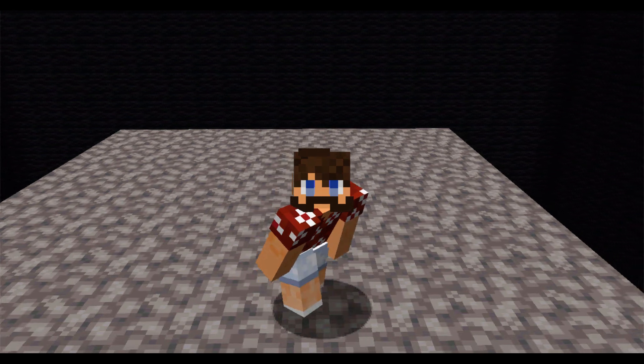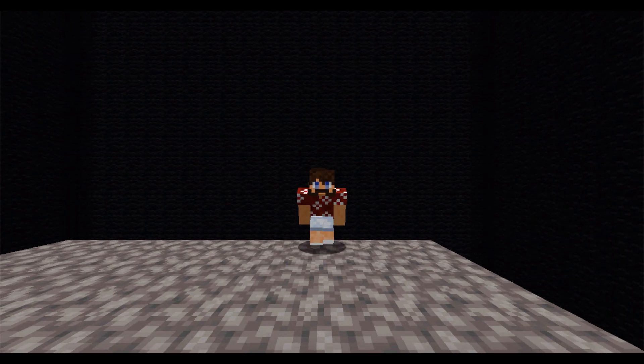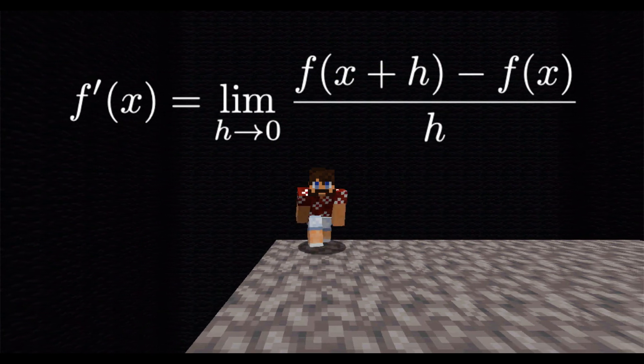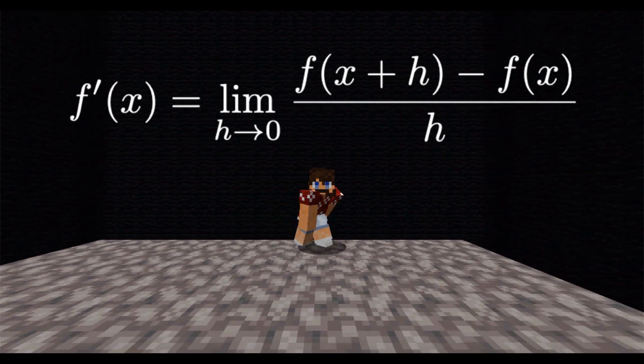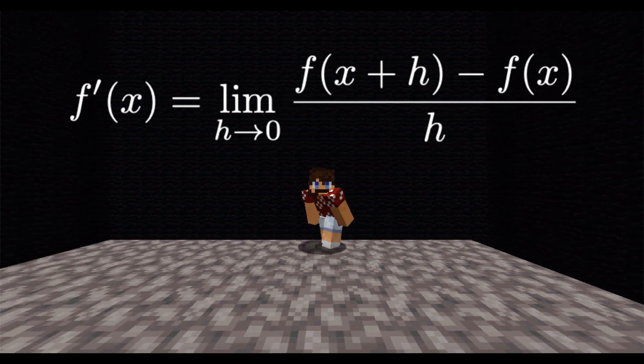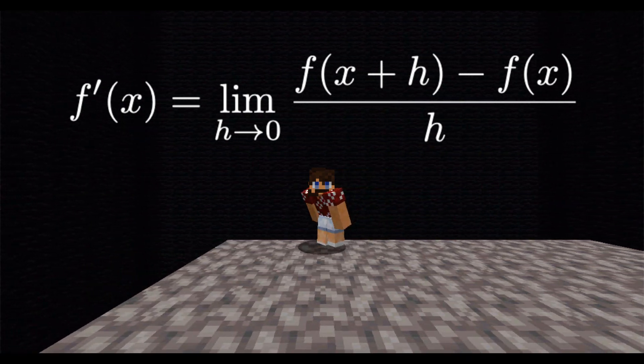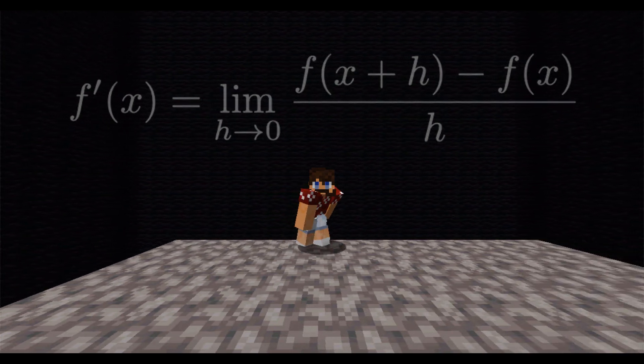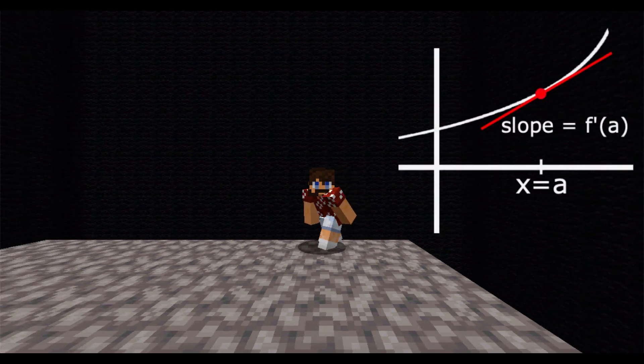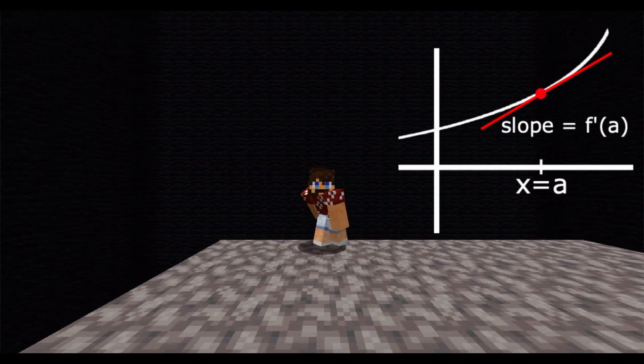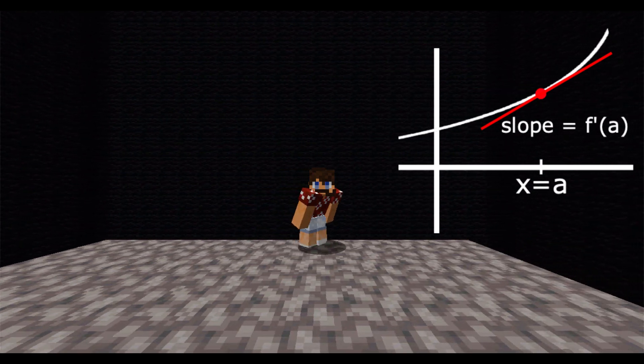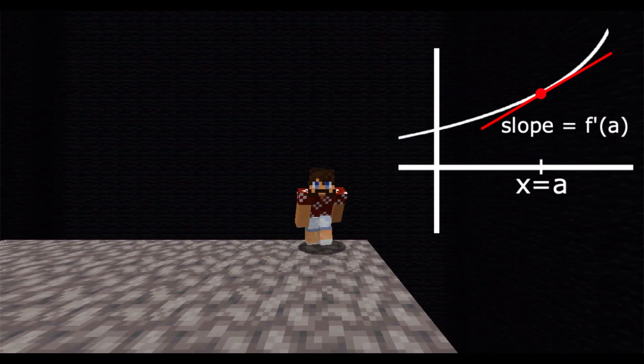Alright, let's get started. For those of you who don't know, the derivative of a function f is defined by f prime equals the limit as h goes to zero of f of x plus h minus f of x over h. This is a function, and if we evaluate it at x equals a, this gives the slope of the tangent line to the graph of f of x at x equals a.